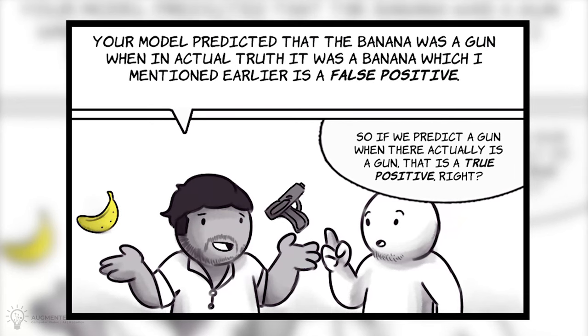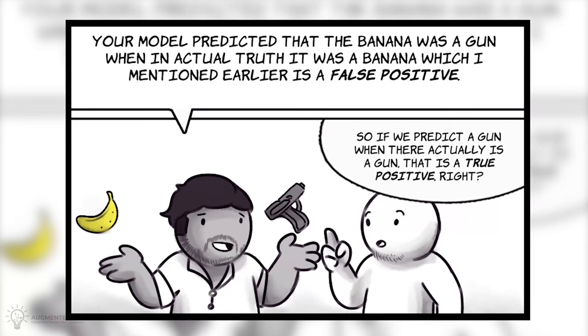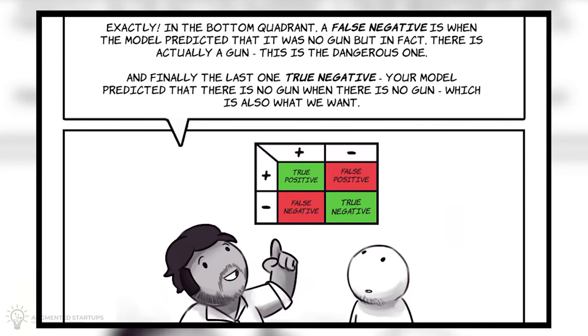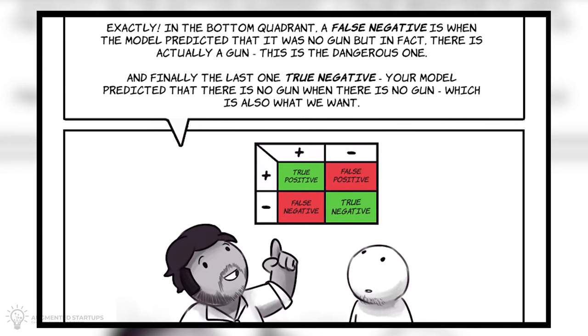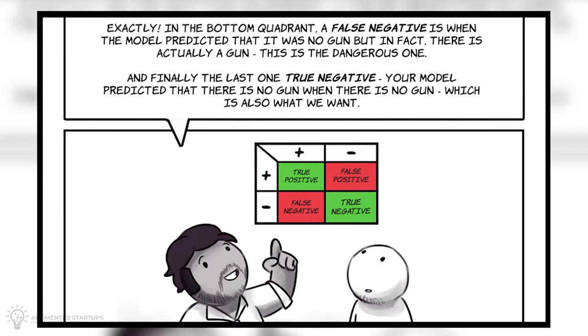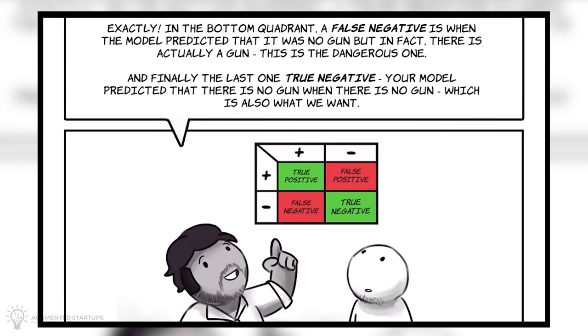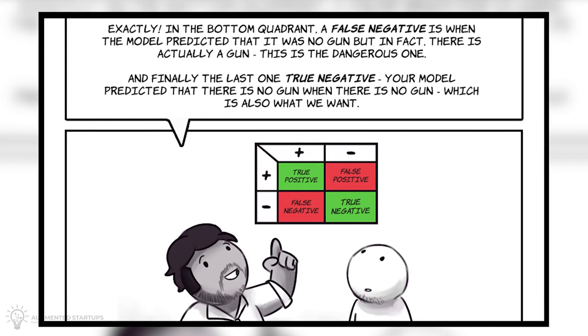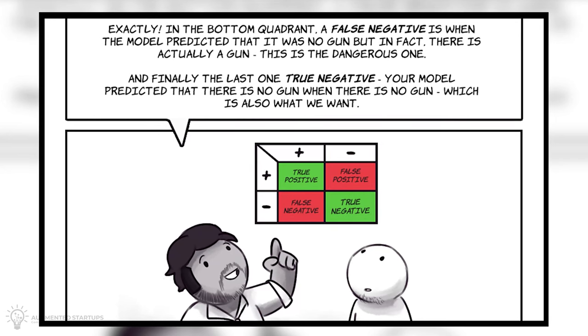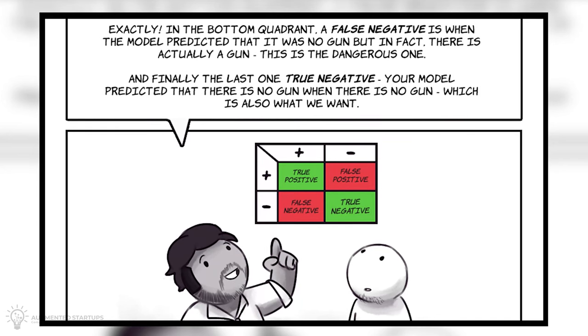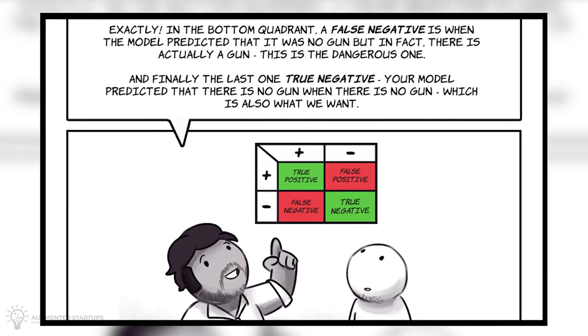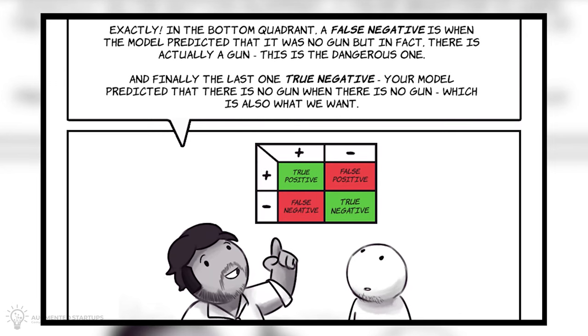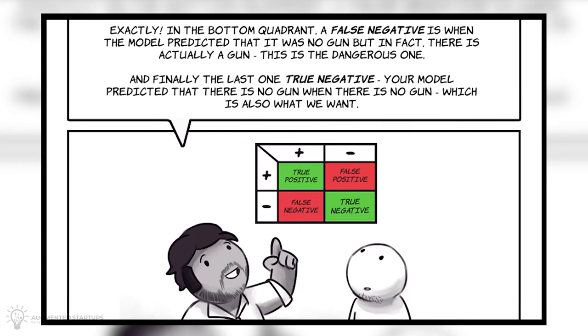So, if we predict a gun when there actually is a gun, that is a true positive, right? Exactly. In the bottom quadrant, a false negative is when the model predicted that there was no gun, but in fact, there was actually a gun. This is a dangerous one. And finally, the last one, true negative. Your model predicted that there is no gun, when there is no gun, which is also what we want.